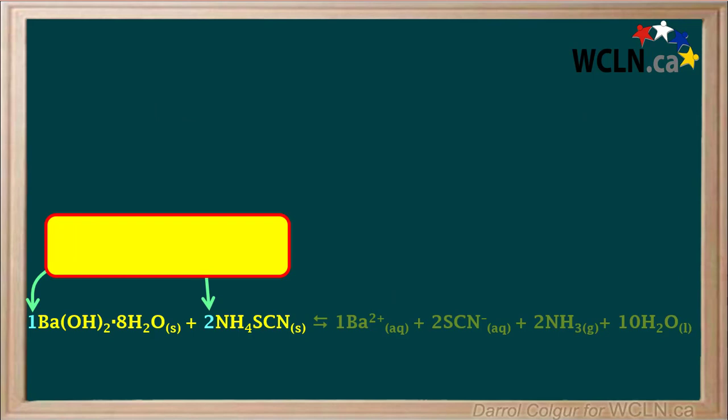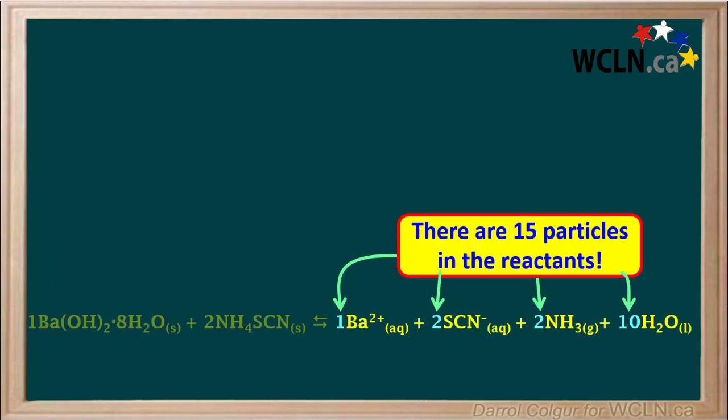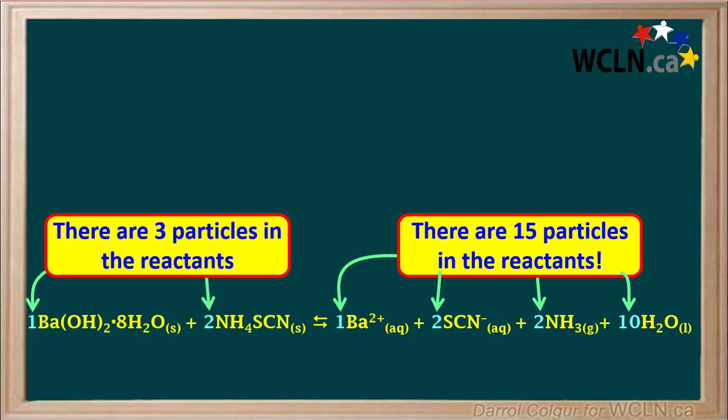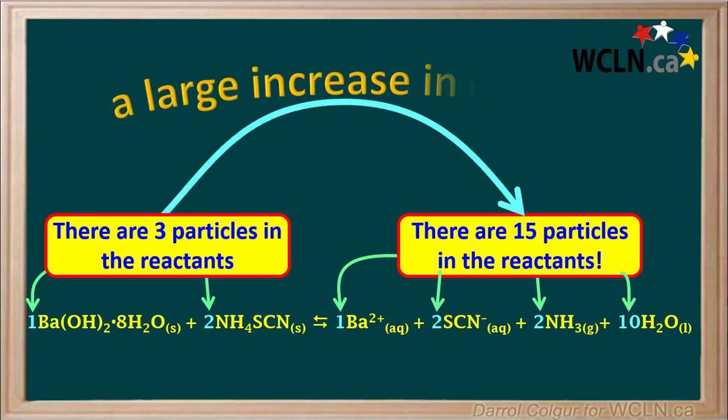As we discussed, the phase or state of a substance has a large effect on its entropy, but so does the total number of particles in a system. In this reaction, there are three particles in the reactants, but if we count the total number of particles in the products, we see there are 15. Going from three particles to 15 particles means there's a large increase in entropy as products are formed.